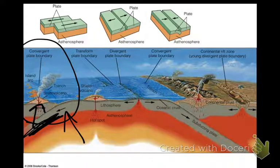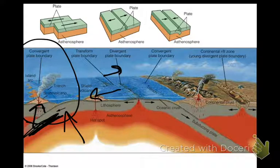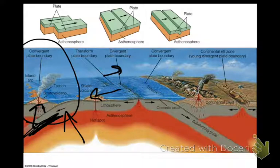Your transform boundary is shown right here along a divergent boundary, which is kind of weird, but you can see how one plate's gone one way while the other plate's gone the other way — they've moved side to side. So that is showing you your transform boundary.